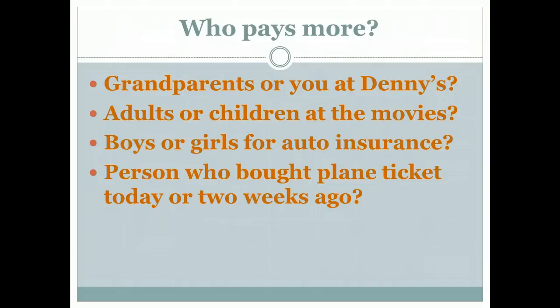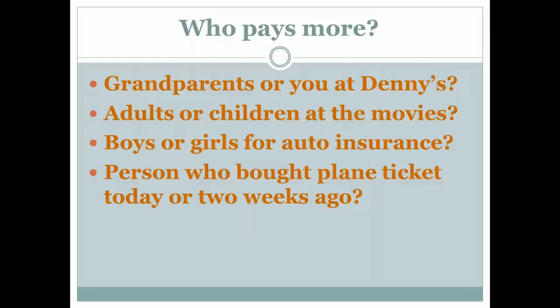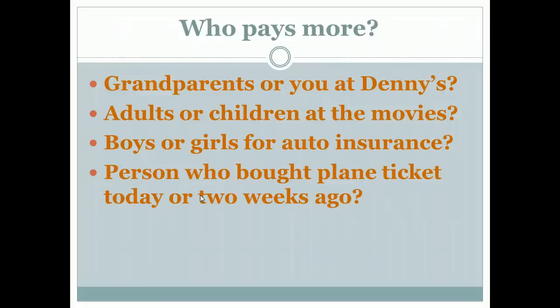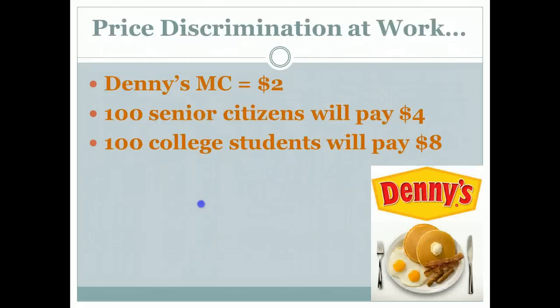Price discrimination can only occur in any market structure where you have control over price. So basically it can occur in any market structure except for perfect competition, because in perfect competition every firm is a price taker. So why would a firm want to be involved in price discrimination? Well, let's take a look at an example and then we can see.